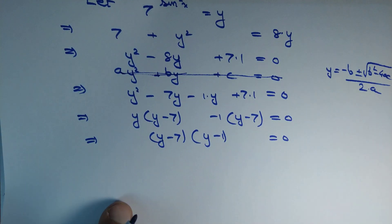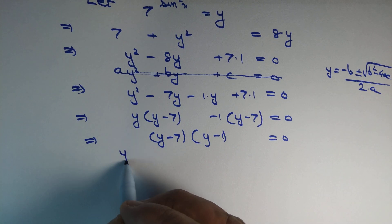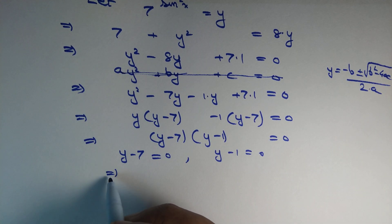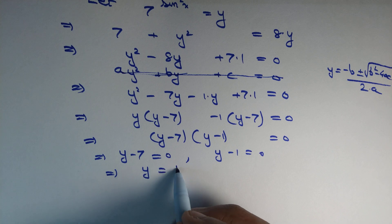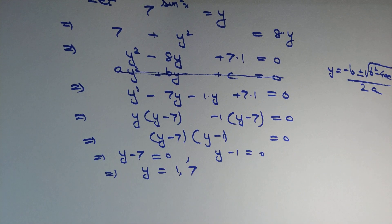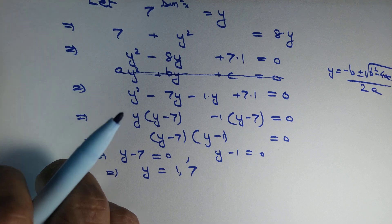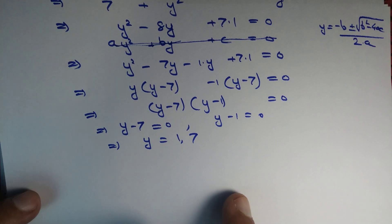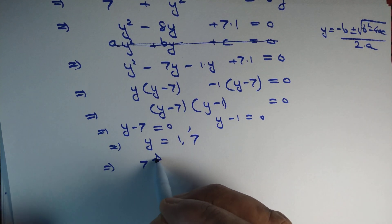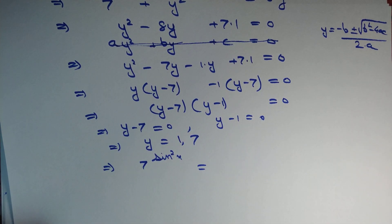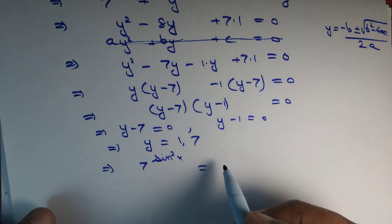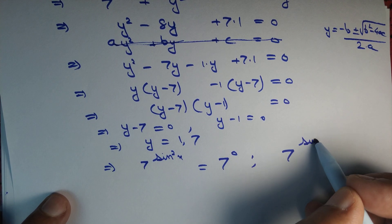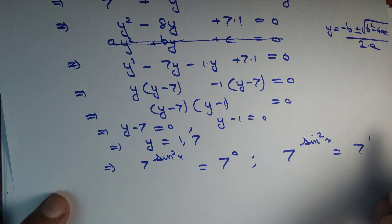Since the product of two numbers equals 0, one of them must be zero. So either y minus 7 equals 0 or y minus 1 equals 0, giving y equals 7 or y equals 1. Substituting back, 7^(sin²x) equals 1 or 7. Since 1 equals 7^0 and 7 equals 7^1, comparing powers gives sin²x equals 0 or sin²x equals 1.